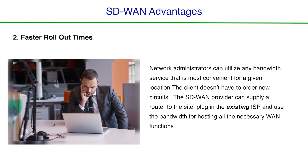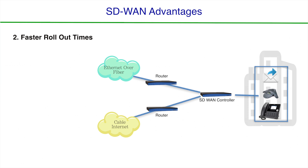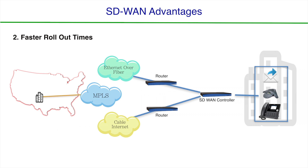Benefit number two, faster rollout times. You can roll out a Wide Area Network using SD-WAN much more efficiently than using tools of the past. Since SD-WAN is carrier agnostic, network administrators can utilize any bandwidth service that is most convenient for a given location. The client does not necessarily have to order new circuits. With SD-WAN, your provider can supply a router to a specific site, plug in the existing ISP or internet service provider for that location, and utilize that bandwidth for hosting all the necessary Wide Area Network functions.